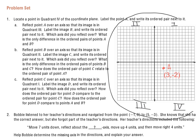So for part A, it says reflect point A over an axis so that its image is in quadrant 3. So that's the first thing I'm going to look at, is I need to go from this quadrant to this one. And I see if I'm looking at the axis, what axis is going to allow me to fold the page over the axis and get that point A into quadrant 3.